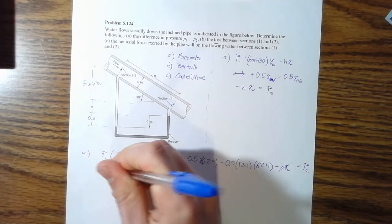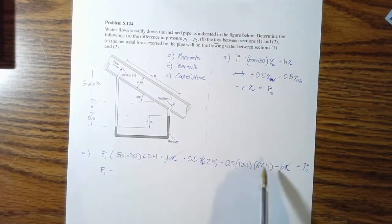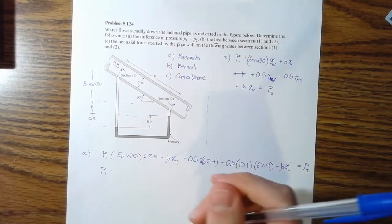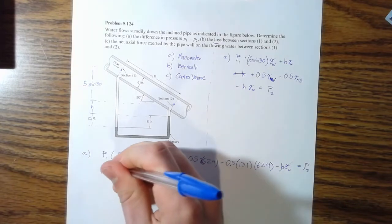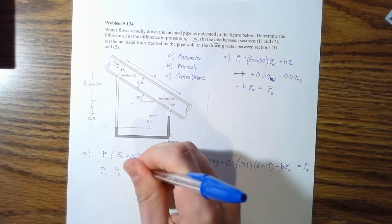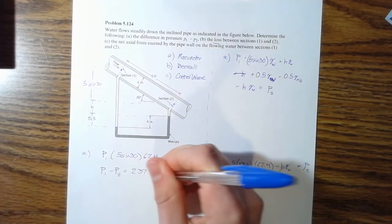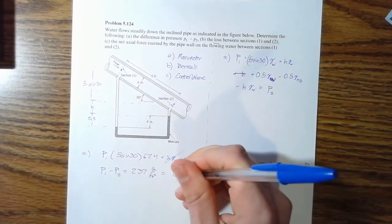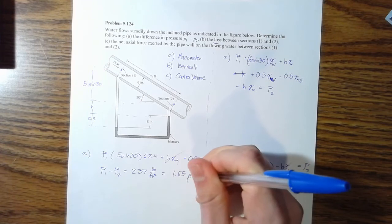So shuffle your numbers down a little bit. Move P two over here and start subtracting stuff. And what we'll get is P one minus P two is 237 pounds per foot squared, which converts to 1.65 PSI.